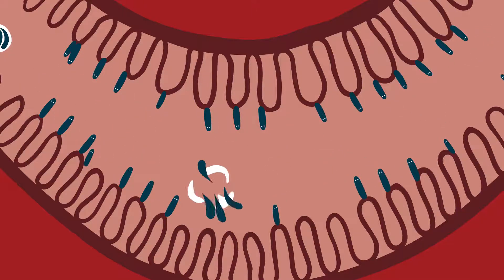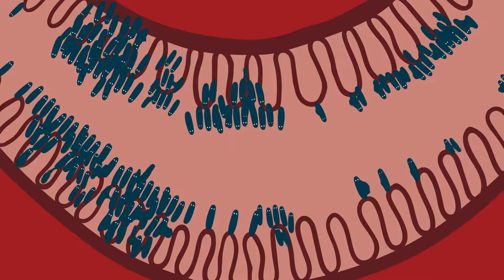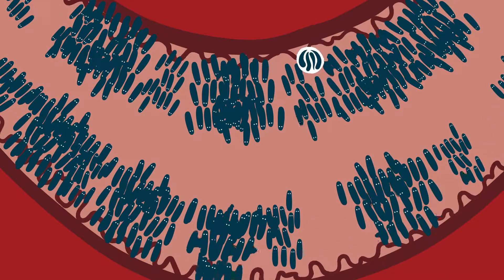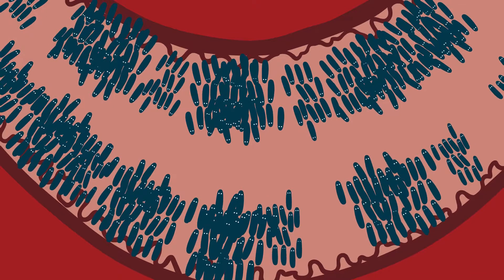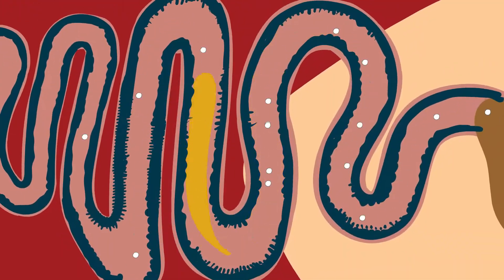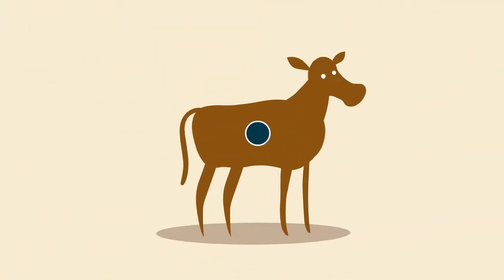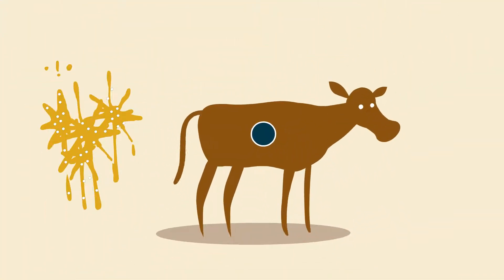The parasites burrow into the gut lining and multiply in huge numbers, damaging the villi of the gut, which are the finger-like projections involved in nutrient absorption. Once these are damaged, the calf cannot absorb nutrients from milk, which causes the characteristic watery diarrhoea associated with cryptosporidiosis, as well as dehydration and depression.